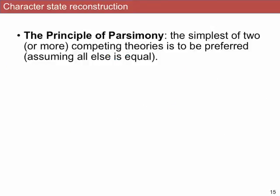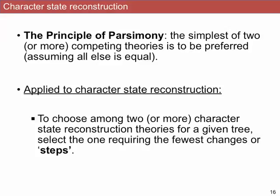The key thing that we're going to do is use this principle of parsimony and apply it to character state reconstruction. The key thing here is that you choose, if you have multiple possible options, the one that is the simplest — that is the principle of parsimony. As we apply this to character state reconstruction, we compare different possible patterns of ancestral character states and we choose the one that requires the fewest number of changes in character state over time. We also call those changes steps, so we look for the pattern that requires the fewest steps over evolutionary time.